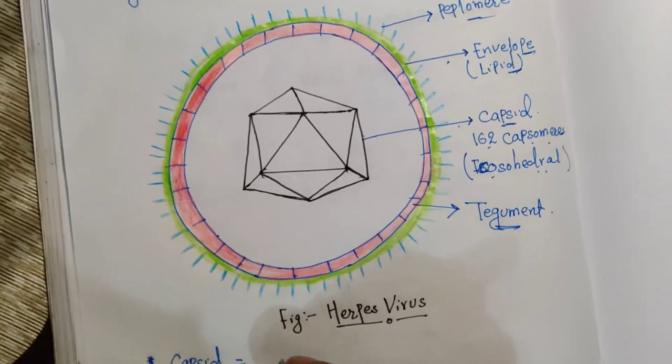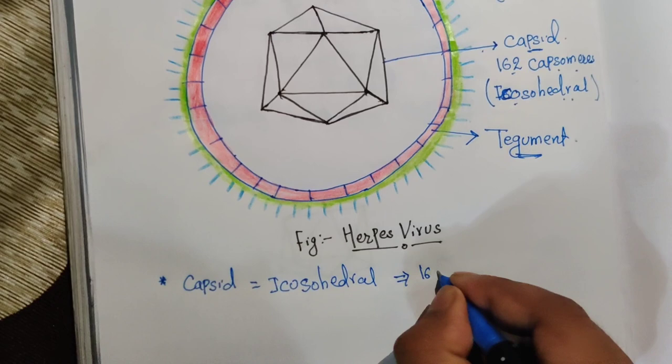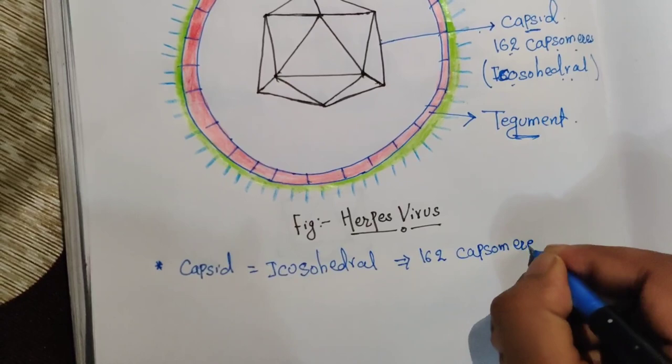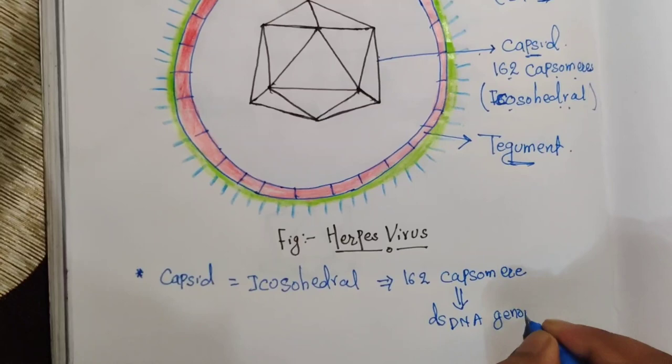The capsid is icosahedral in structure and contains 162 capsomeres. Each capsomere has the genetic material — that is the double-stranded DNA genome — present within the capsomeres. That completes the morphology of herpes viruses.